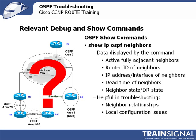It also shows the state of the designated router and backup designated router that it may be connected to. If it's the DR, it'll say full slash DR. If it's a backup designated router, it'll say full slash BDR. And if it's just another device that's neither, it'll say full slash DR other, meaning it is neither the DR nor the BDR.